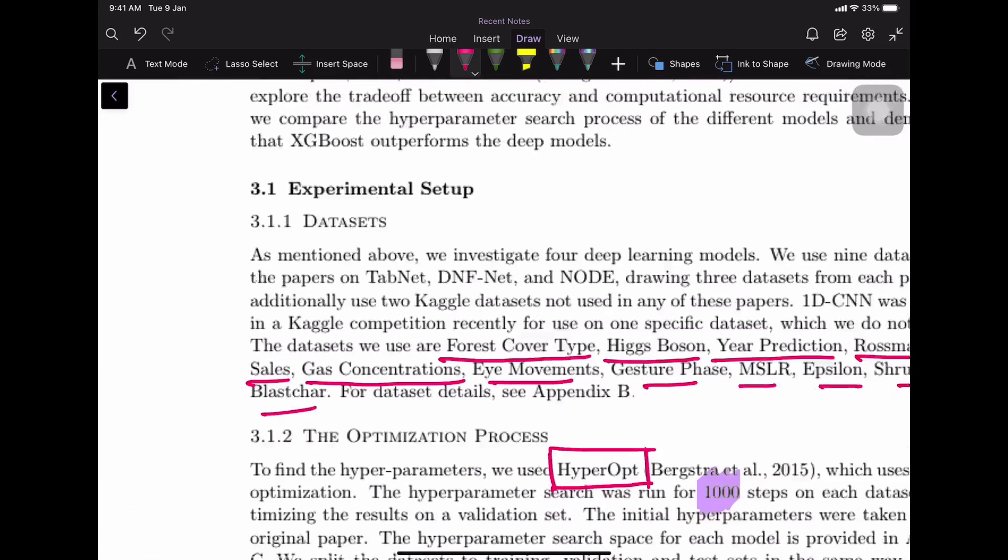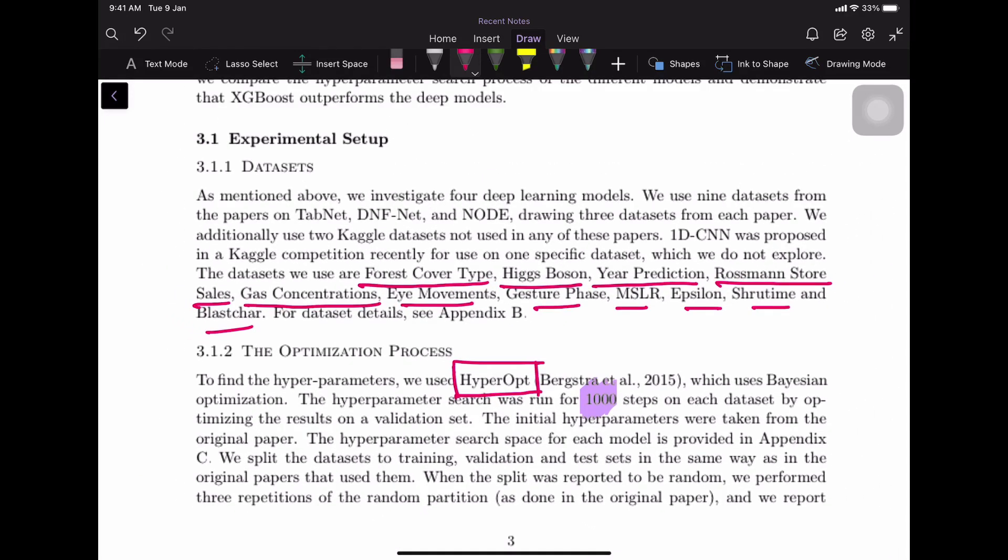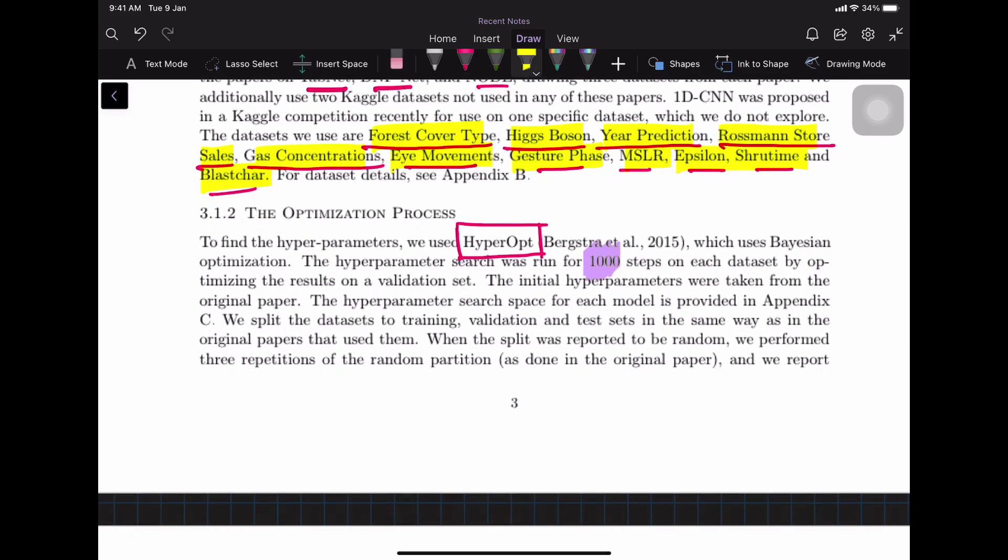So what is their experiment setup? The datasets that they used are from the papers actually published when these libraries were introduced: TabNet, DNFNet, NODE. Other than that, they also used some other datasets from Kaggle which none of these papers published. The datasets that they used are Forest Cover Type, Higgs Boson, Year Prediction, Rossmann Store Sales, Gas Concentration, Eye Movement, Gesture, Phase, MSLR, Epsilon, Shrutime, and Blastchare. You can look at the appendix for further detail about what these datasets are and what kind of information they have.